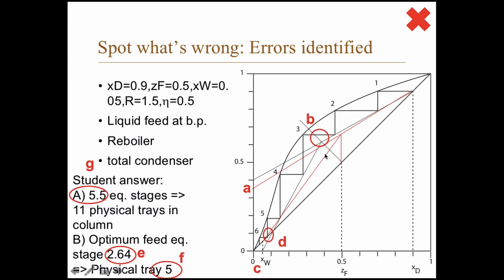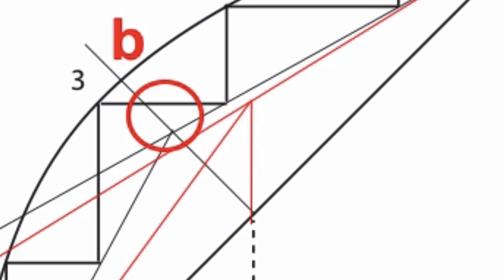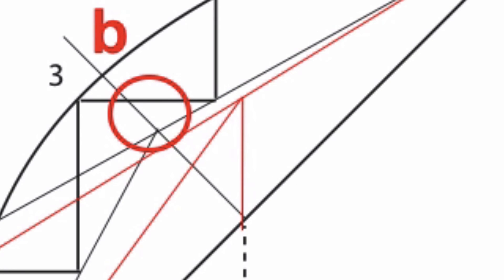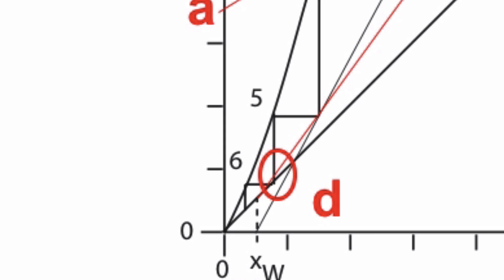b. Well, the thing that's wrong there is that the q line is wrong. It is a liquid feed at its boiling point, and that should be a vertical line. See, the lower operating line should intersect the diagonal in the point xw. But in this case, the student has drawn the lower operating line down here, and that's simply wrong.